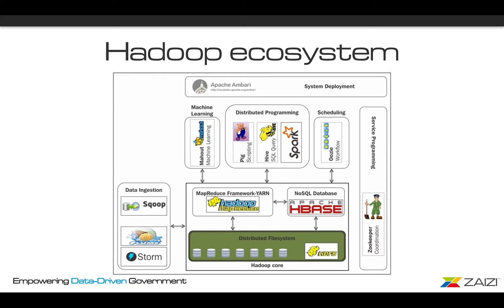We are not going to focus today on machine learning and scheduling, but just on the distributed programming system. The distributed programming system is based on the Spark framework for real-time analysis, Apache Hive which is the data warehouse, and Pig scripting for loading and analyzing data. On top of that there is the Apache Ambari console for system management.